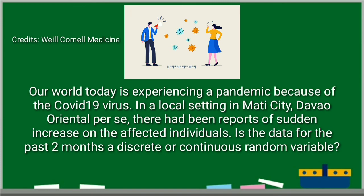Our world today is experiencing a pandemic because of the COVID-19 virus. In a local setting, in Mati City, Davao Oriental, per se, there had been reports of sudden increase on the affected individuals. Is the data for the past two months a discrete or continuous random variable? You are correct. It is discrete random variable. Because the data is countable.